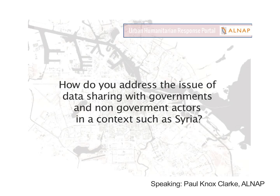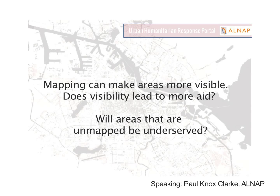Looking at some potential negative effects that need to be guarded against in mapping, Gabby, here's another interesting question: mapping can make the mapped areas more visible than those that remain unmapped. By mapping somewhere, it becomes more salient and more visible to humanitarians. Does visibility always lead to more aid, and do you have any concerns that areas which are unmapped and therefore less visible will be underserved by humanitarian responses?